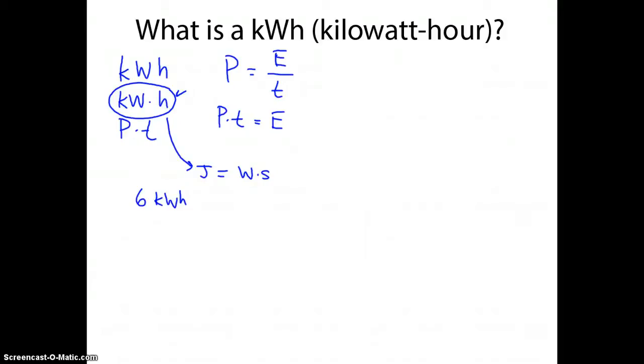So if we have kilowatts, we want to go to watts, we have to say we have a thousand watts in one kilowatt. So we can cancel those. And then we need to convert hours to seconds. We know that there's 3,600 seconds in one hour. So we can cancel those. And finally, you multiply across, and you get something on the order of 2.16 times 10 to the 7 watt seconds.